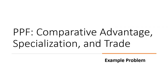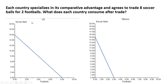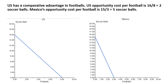In this video we're going to look at the production possibilities frontier and then talk about comparative advantage, specialization, and then trade. We have two countries, the US and Mexico. Each country is going to specialize in its comparative advantage and agrees to trade eight soccer balls for two footballs. What does each country consume after trade? The first thing we want to do is figure out which country has a comparative advantage in footballs and which country has a comparative advantage in soccer balls.